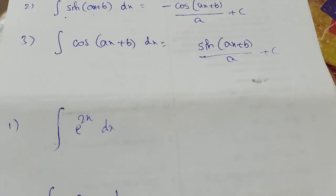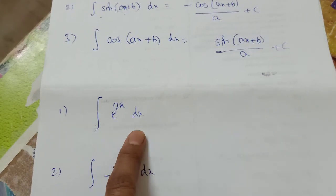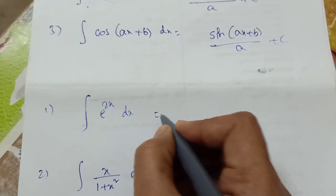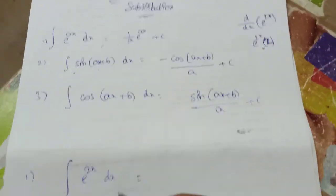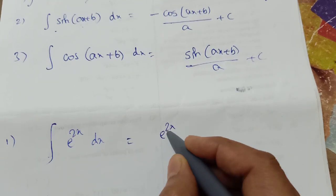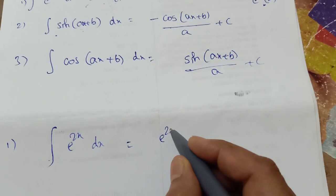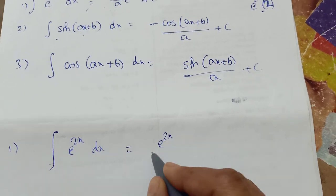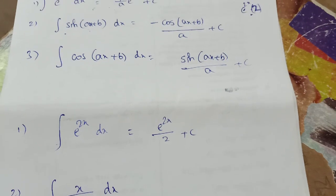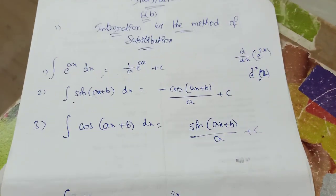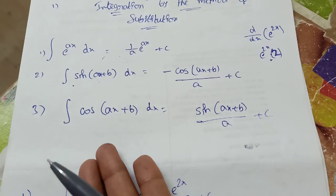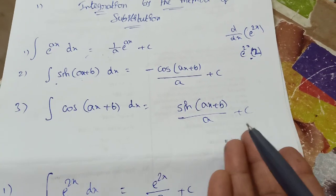Next example: the integration of e^(2x) dx. Using the same formula, it is e^(2x) divided by 2, plus C. The coefficient is 2, so we divide by 2. It's very easy.